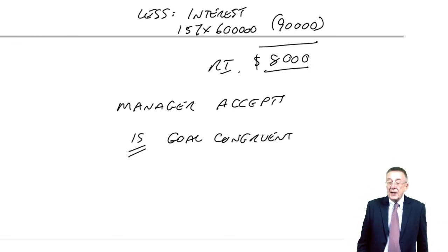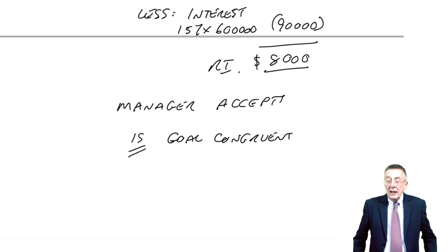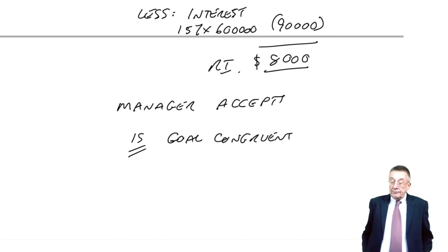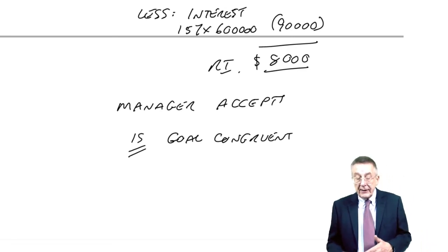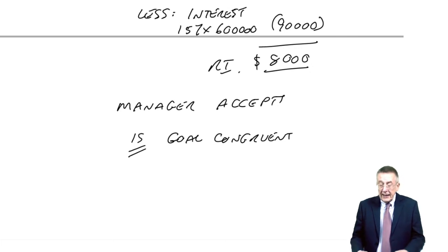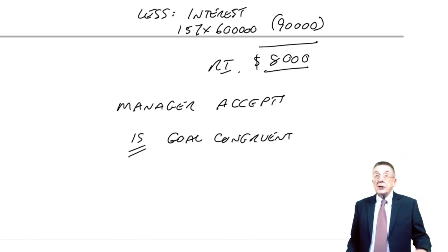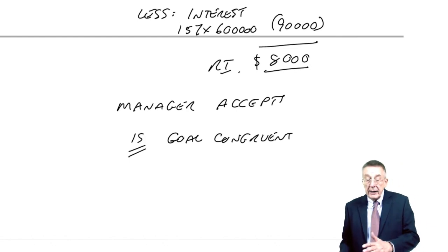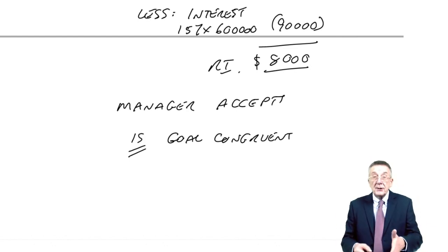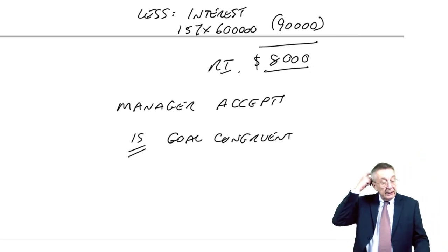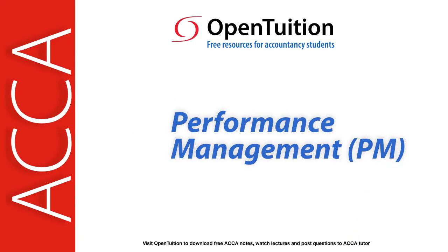Now, we shall talk about advantages and disadvantages. That's the arithmetic — it's not hard at all, though they can make questions quite a bit longer, so you must practice questions. The principle never changes. There are the two ways: return on investment and residual income. Whatever I say shortly about advantages and disadvantages, I think you can see that theoretically, residual income is better because we automatically get goal congruence. I'll cover the reasons for using ROI and the reasons for using residual income in the next lecture.